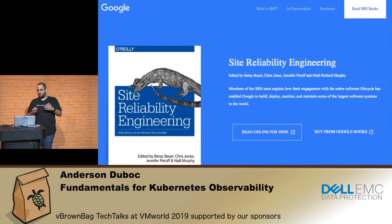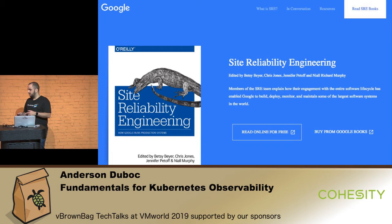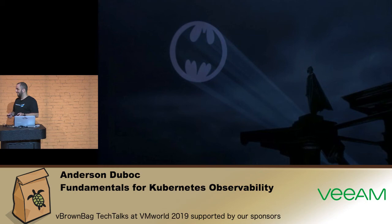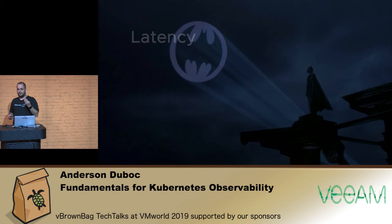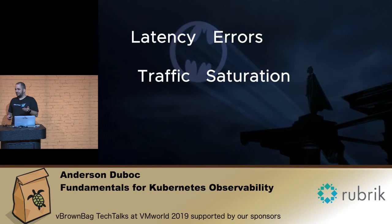Google has a really nice book about site reliability engineering with an awesome chapter about monitoring that talks about four signals — the golden signals. Whenever you have a team taking care of a service, you have to think about their lives, because they don't want to be on call all the time. When I want to call my team to act on something, I want to leverage those four golden signals: latency, traffic, errors, and saturation.